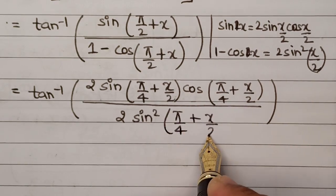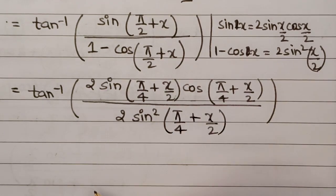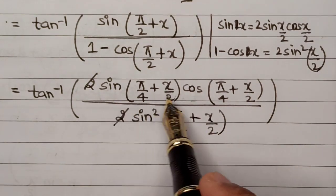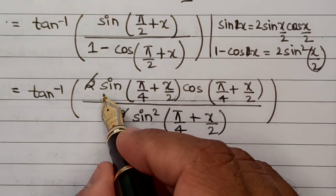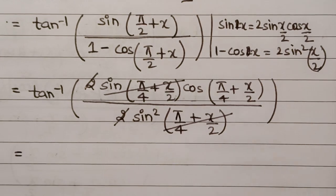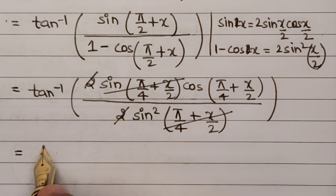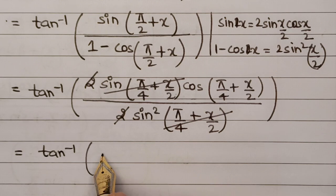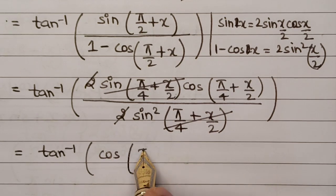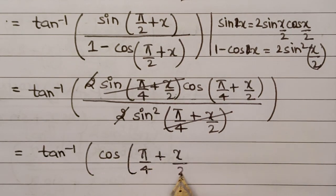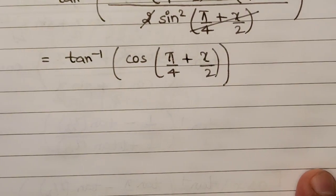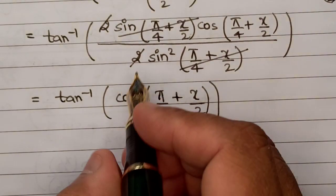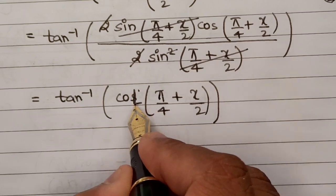Clearly we can cancel out the 2 from here, and sine pi by 4 plus x by 2 is repeating in this case, so this can entirely be cancelled out. So all that we are left with is tan inverse of cos pi upon 4 plus x upon 2 here. So this now has been reduced to a significantly small form. Oh sorry, this is not cos, this will be cot because we have a sine left, so cos upon sine will become cot.